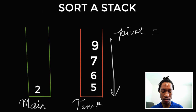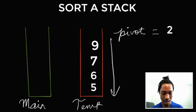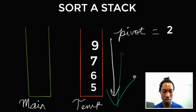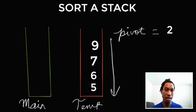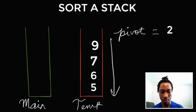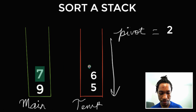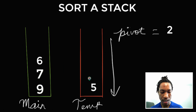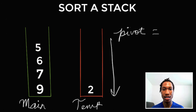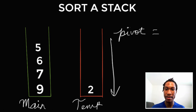Our pivot value becomes 2. We take 2 as the pivot and order the elements in temp with respect to 2. Whenever we get to a number greater than 2, we pop it out of temp and put it back into main. All of these numbers are greater than 2, so we pop all of them out and push them into main. Then we push 2 into temp, and push back all the elements we popped out, since they were greater than 2 and should come after it.